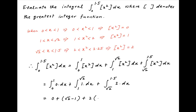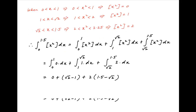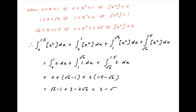The first term is equal to 0, the second term is equal to √2 − 1, and the third term is equal to 2(1.5 − √2). This simplifies to √2 − 1 + 3 − 2√2, which is equal to 2 − √2, which is the required answer.